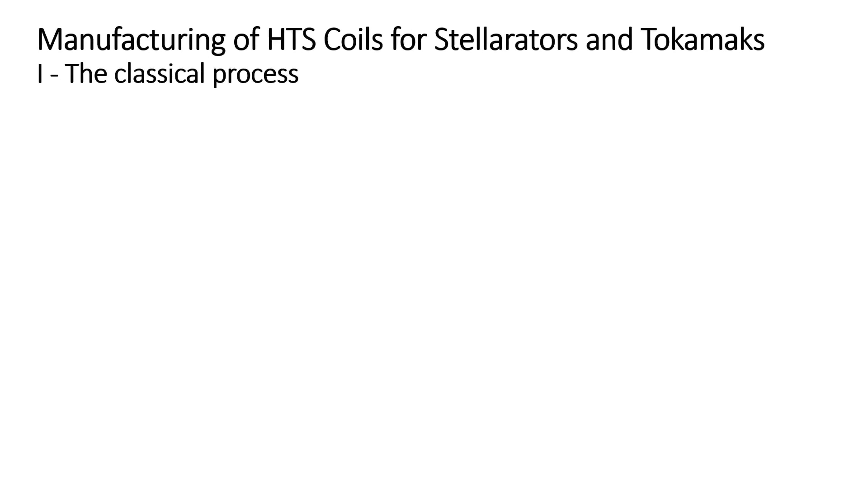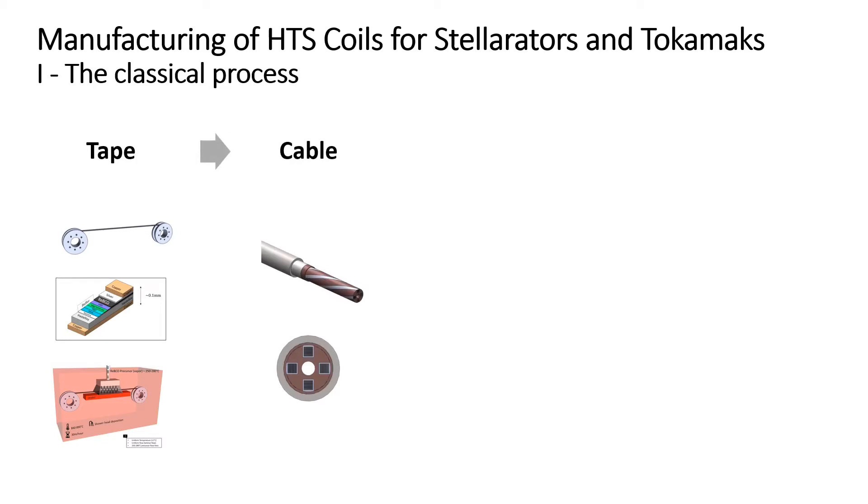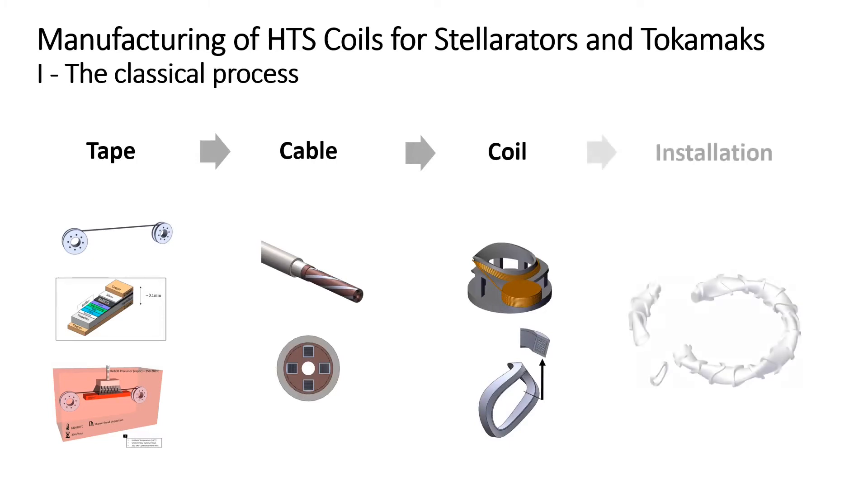A coil for a fusion stellarator is usually made in four steps. It starts with the manufacturing of a high-temperature superconducting tape. Superconducting cables are then made by winding the tapes on a metallic former. The cables are then used to make coils that are then installed on the stellarator vessel.